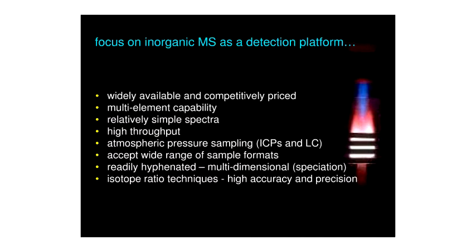Turning now to inorganic mass spectrometry utilizing ICP-MS: by far it is the most powerful inorganic analytical instrumental technique available. It has become widely available and competitively priced — not much more costly than an ICP-OES instrument. It offers the same multi-element capability and more, with relatively simple spectra. There are only about 300 isotopes in the periodic table, compared to hundreds of thousands of emission lines from 110 elements, so the chances of interference are much less in ICP-MS. It also uses atmospheric pressure sampling as opposed to classic thermal ionization mass spectrometry.